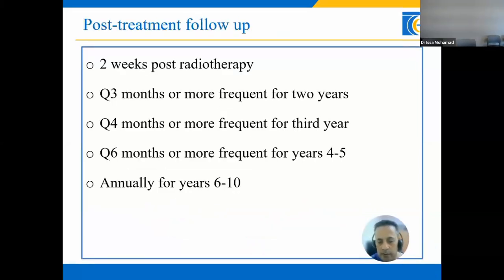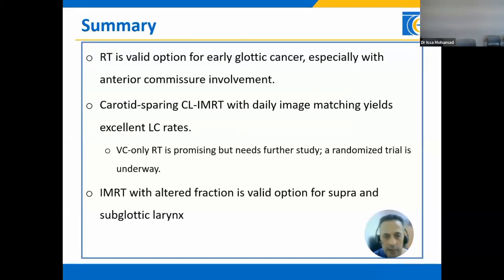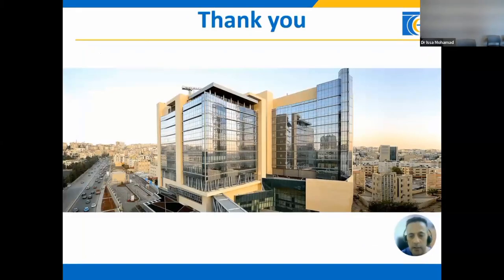During radiation therapy, we see early-stage laryngeal cancer patients weekly to manage acute side effects. Post-radiation, follow-up is at 2 weeks post-RT, then every 3 months for 2 years, every 4 months in year 3, every 6 months for years 4 to 6, and annually for years 6 to 10. We follow up with fiber optic laryngoscopy and order imaging as clinically indicated. In summary, radiotherapy is a valid option for early-stage glottic cancer, especially with anterior commissure involvement. Carotid-sparing complete larynx IMRT with daily image matching yields excellent local control rates. Vocal cord only radiation is promising but needs further study — a randomized trial is underway. IMRT with altered fractionation is a valid option for supra- and subglottic larynx cancer.